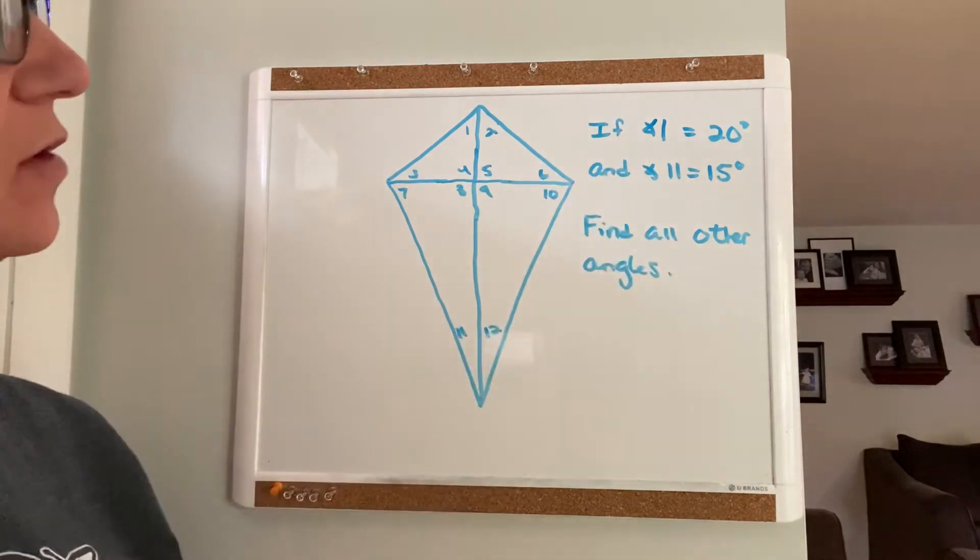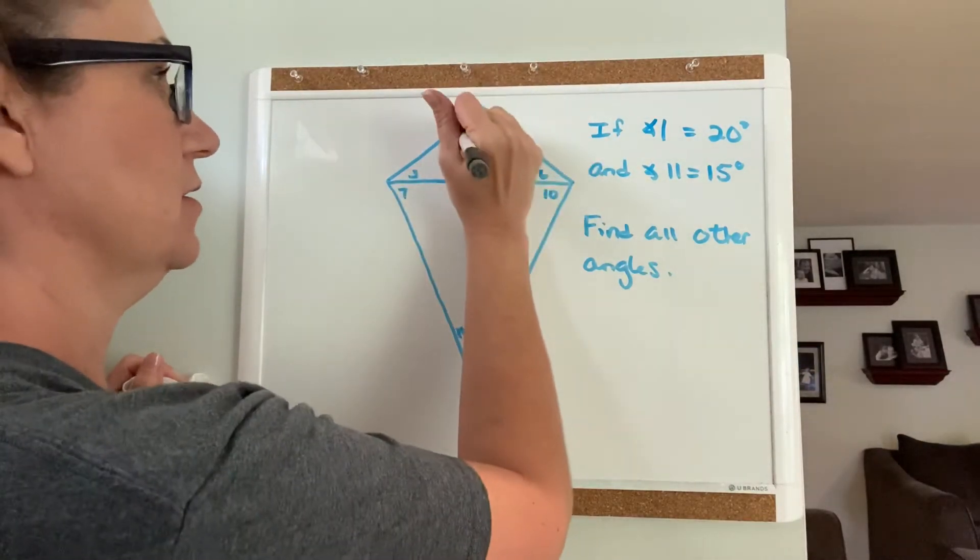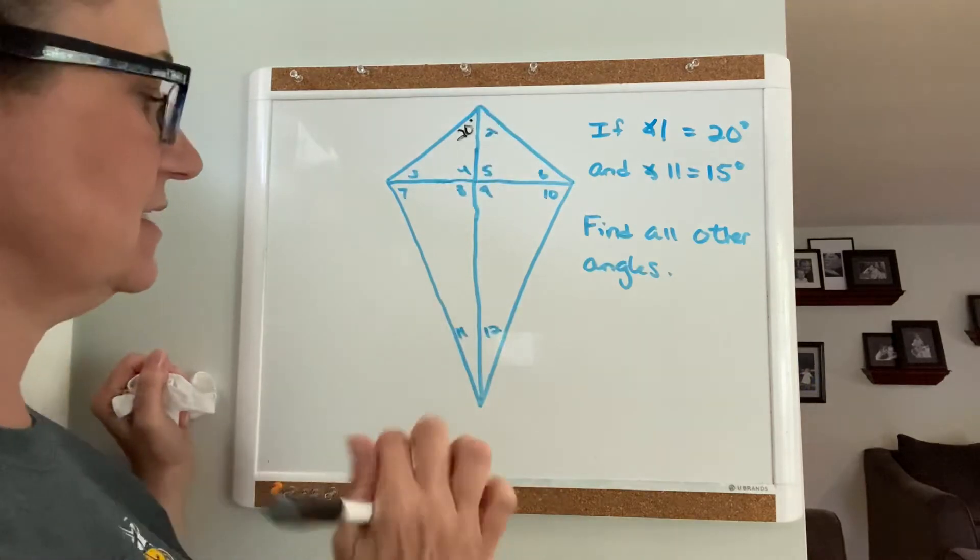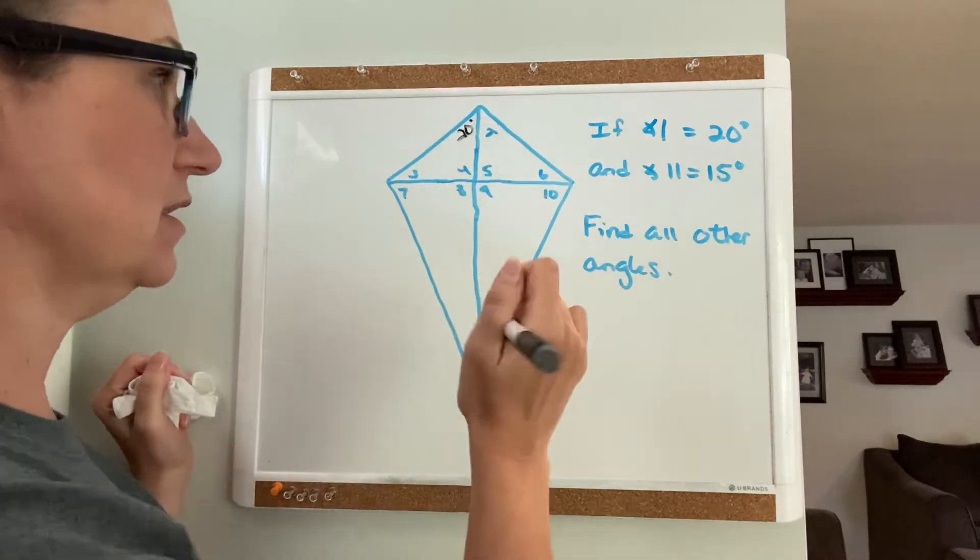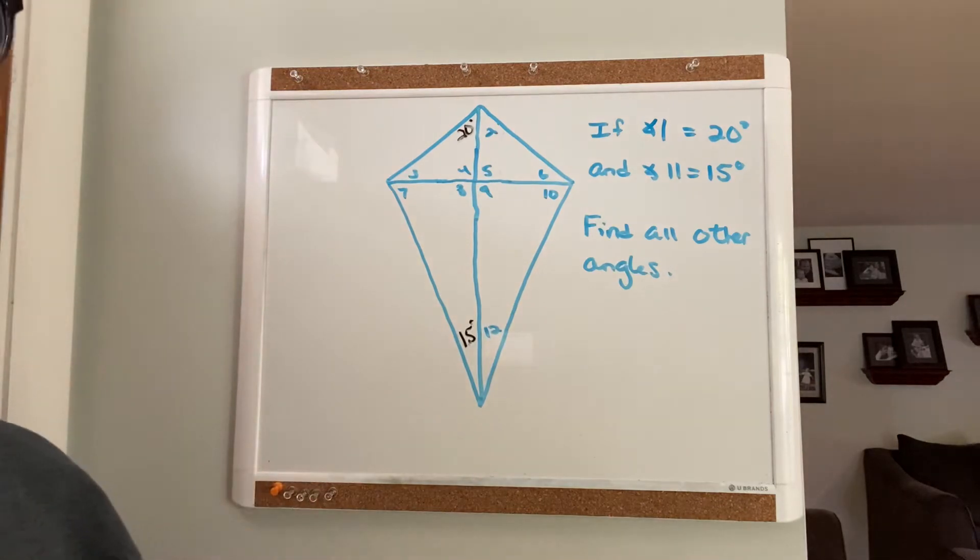Here's the given information: angle 1 is 20 degrees and angle 11 is 15 degrees. I'm going to replace the 1 right here with 20 degrees and replace angle 11 with 15 degrees.